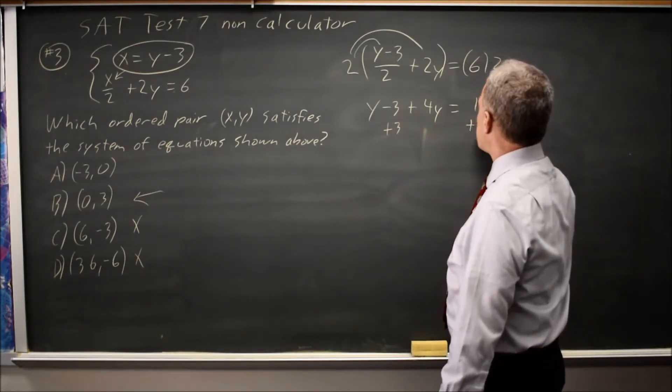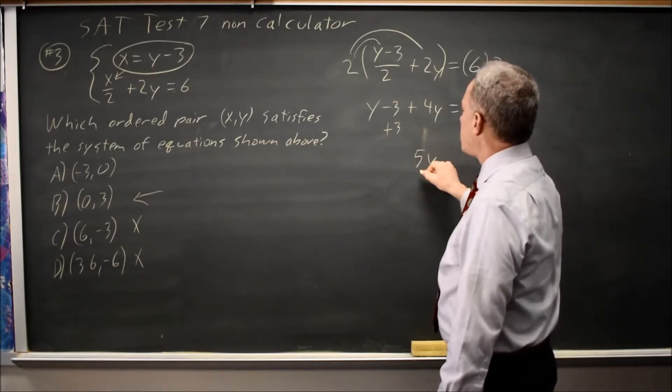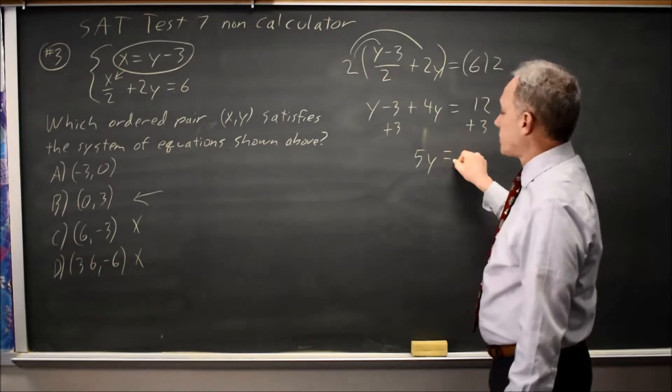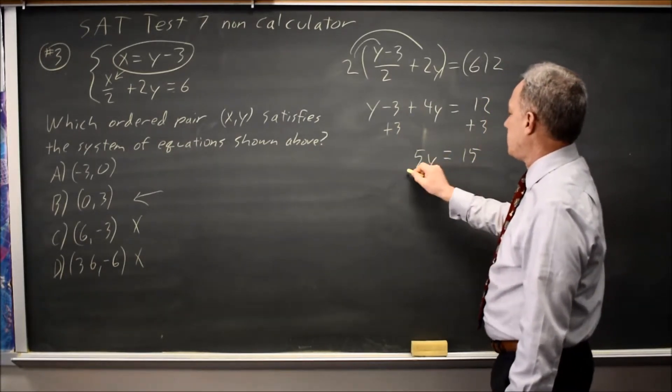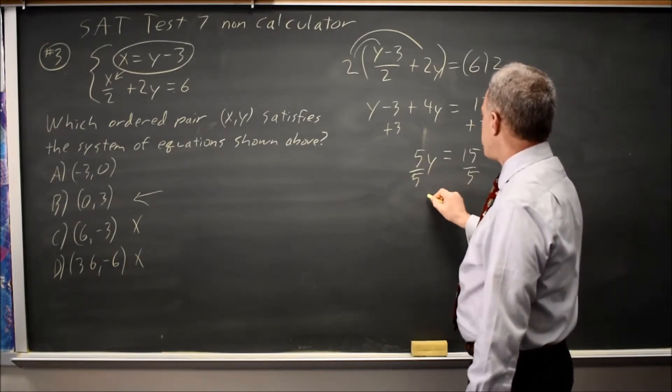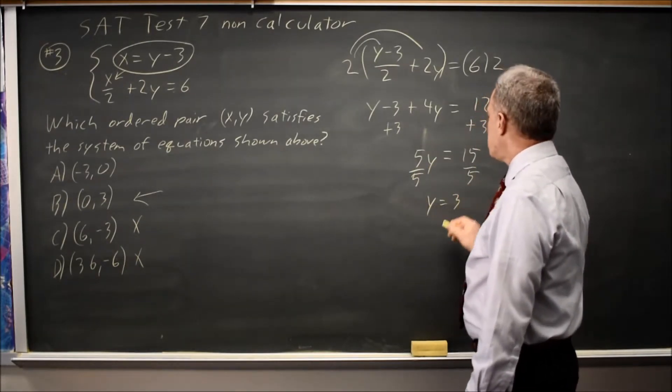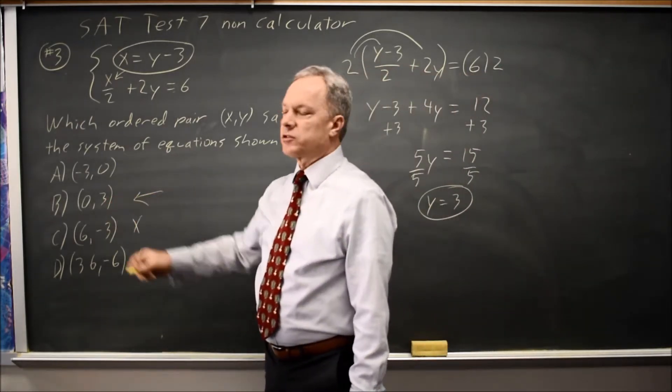Add 3 to both sides. y plus 4y is 5y. Negative 3 plus 3 is 0, that's why I added 3. 12 plus 3 is 15. Divide by 5, and 5y equals 15 becomes y equals 3. So the correct answer is the choice that has a y-coordinate of 3, and that is choice B.